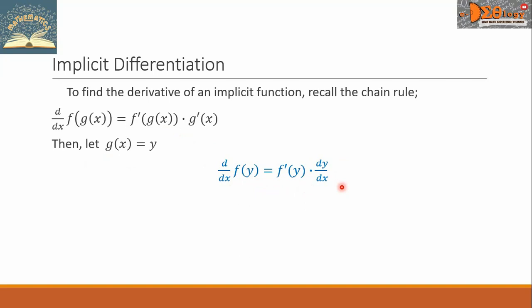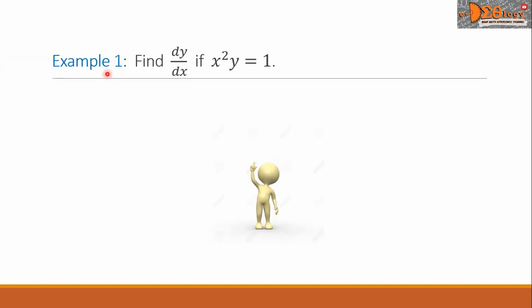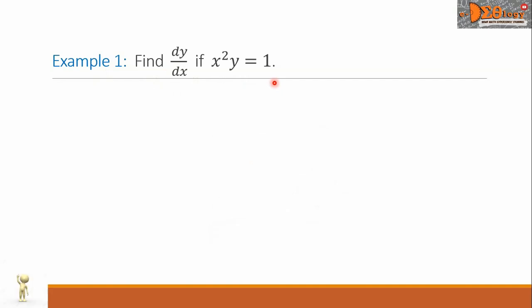Let us see this example. Find dy over dx if x squared times y equals 1. We have two solutions here.